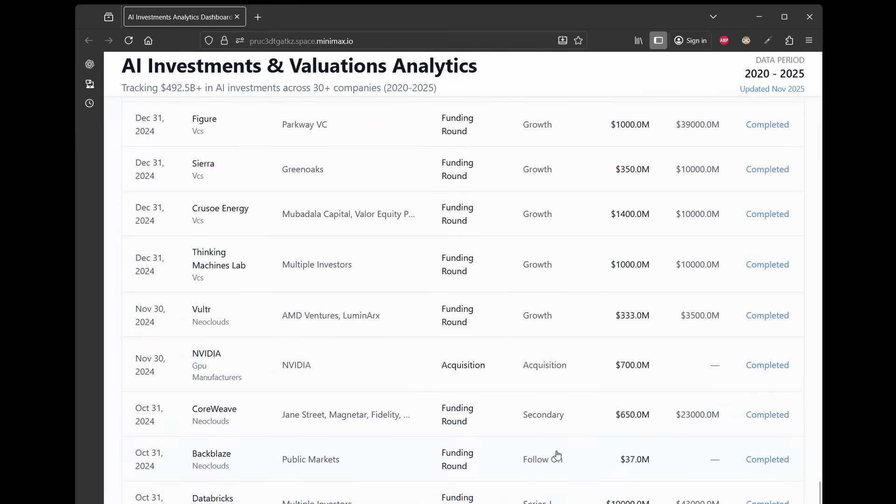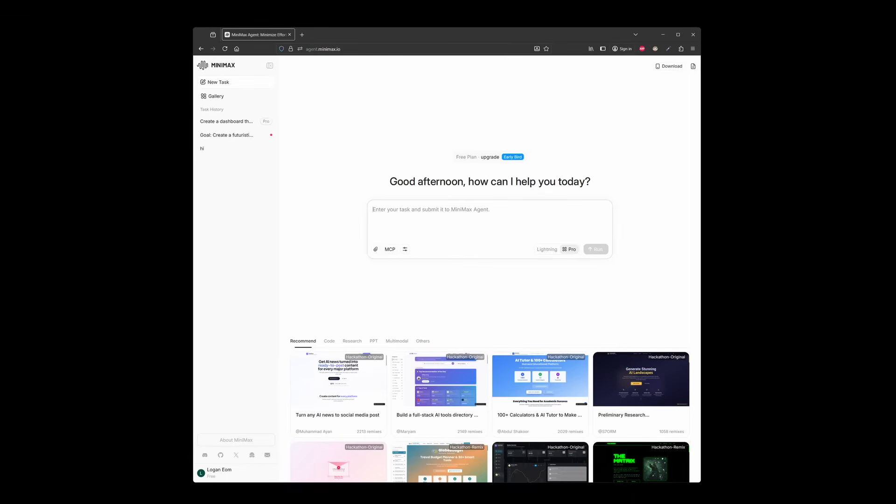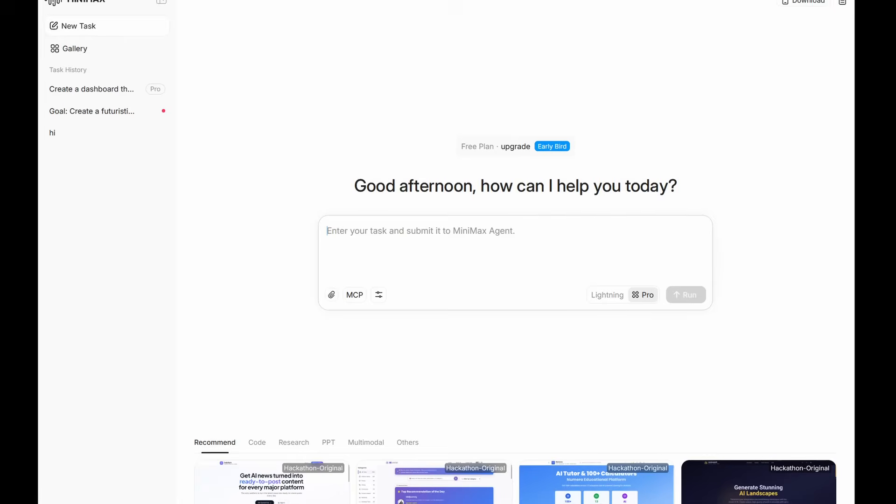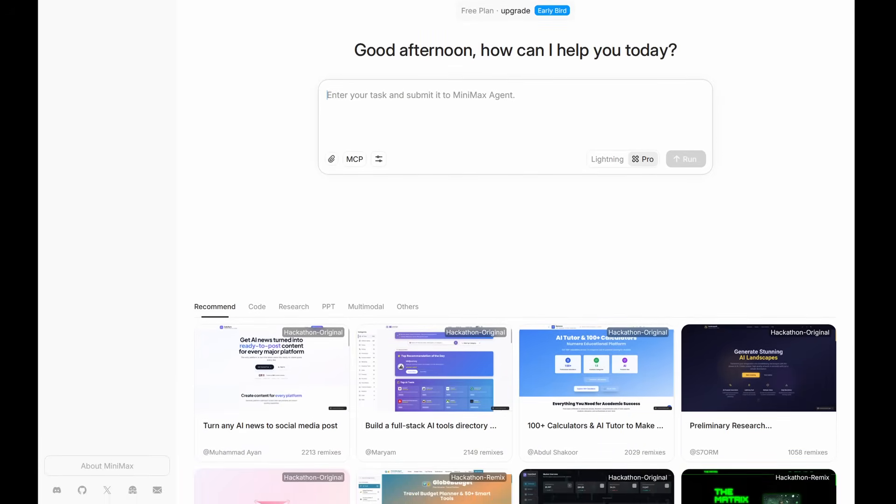To try out the model Minimax agent, feel free to check out the link in the description. And this top-tier open-source AI model can be useful whether you're a developer, researcher, or AI enthusiast. Feel free to check out the model to see its powerful reasoning and also cost-effective model that helps you build smarter, faster workflows with M2.